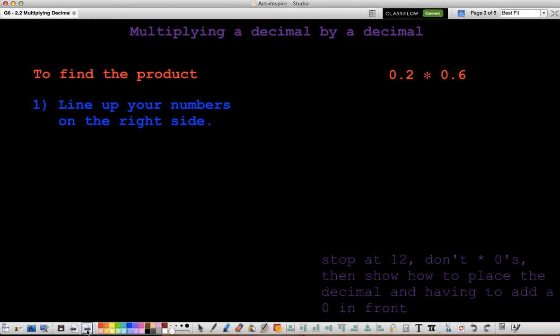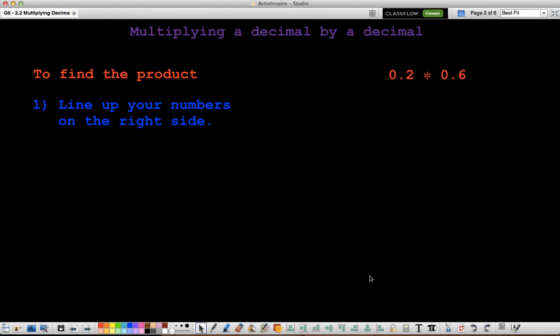When we're multiplying decimals, and I strongly encourage you to write down these steps, so when we multiply with decimals, what we really like to do often is we like to line up our decimals. And you don't have to do that when you're multiplying with decimals. It actually makes it longer and more difficult, so we're really going to focus on not doing that. So first, you line up your numbers on the right side.